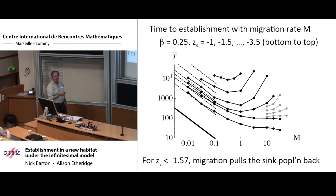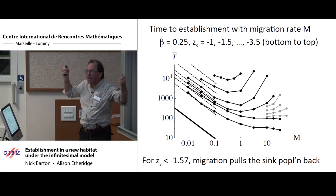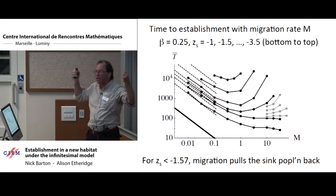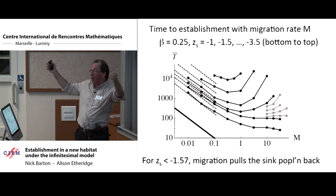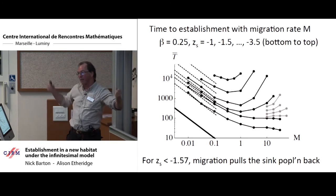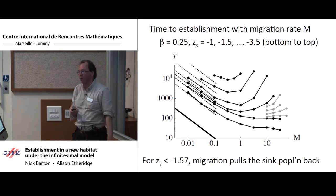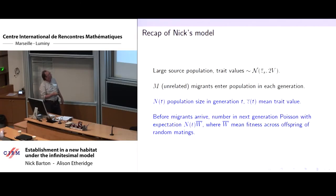So the expected time to establishment becomes infinite as the migration rate goes up, if the migrants are just too hopeless. It's not entropic — it's simply that mating with something too badly adapted produces offspring that are on average halfway back to where they were. Too many migrants coming in from a poorly adapted source swamps the adaptation.